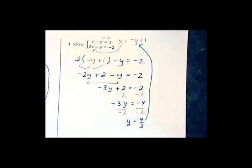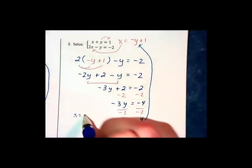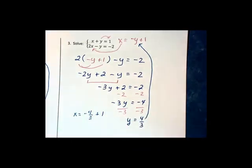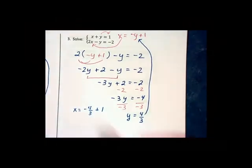When I substitute that 4 thirds in, it says x is negative y. That means x will become negative 4 thirds plus 1. When we add with fractions, we need a common denominator.